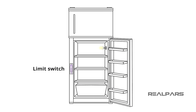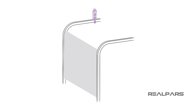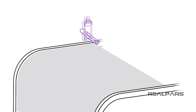When you open the fridge door, a light comes on inside. How does that happen? A limit switch is used to detect if the fridge door is open or closed. On many overhead garage doors, there is a limit switch that stops the movement of the door when it reaches its fully opened position.